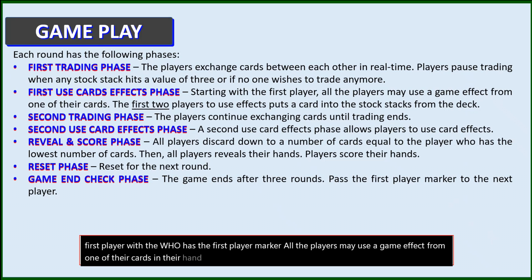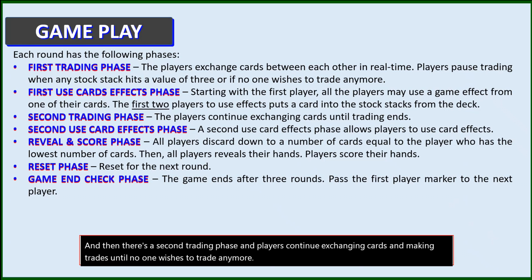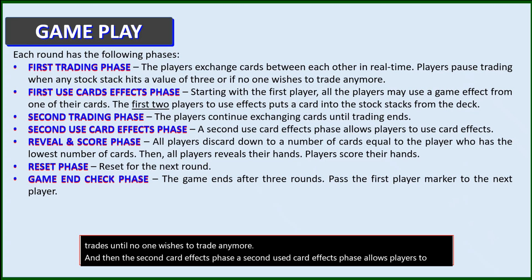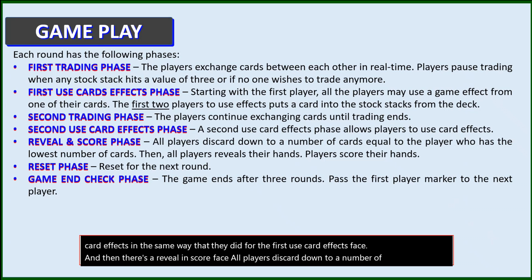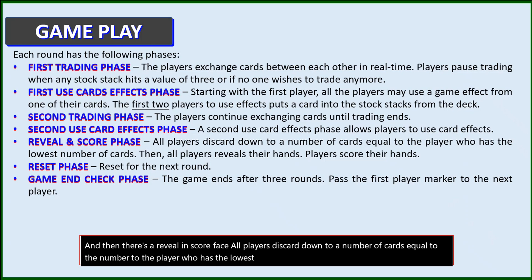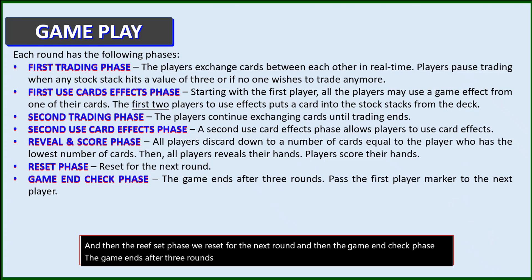The first two players to do so put a card into the stock stacks from the deck. Then there's a second trading phase, and players continue exchanging cards and making trades until no one wishes to trade anymore. Then the second card effects phase allows players to use card effects in the same way as the first use card effects phase. Then there's a reveal and score phase — all players discard down to the lowest card count, reveal their hands, and score. Then the reset phase, and the game end check phase. The game ends after three rounds. You pass the first player marker to the next player on the left.